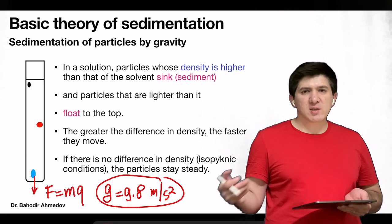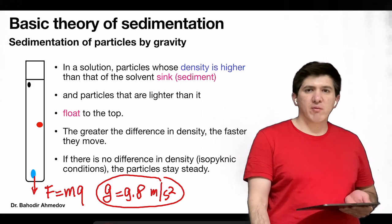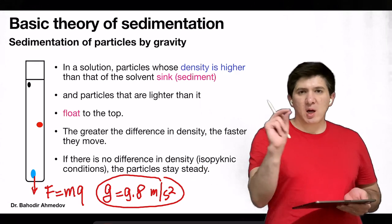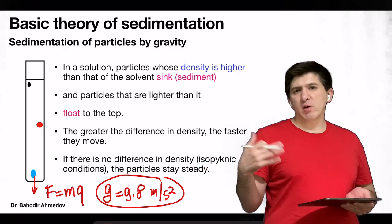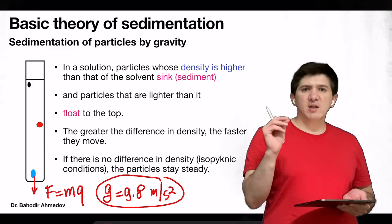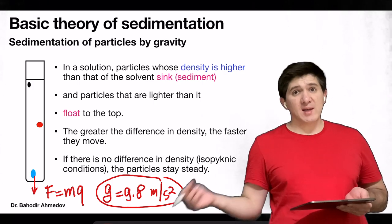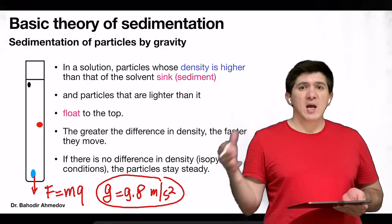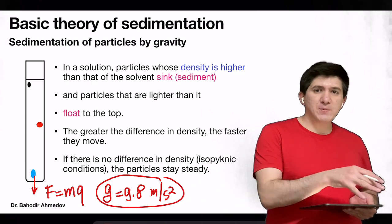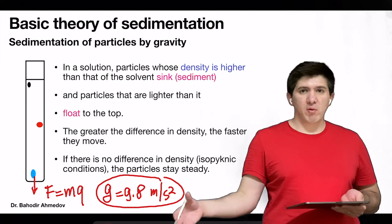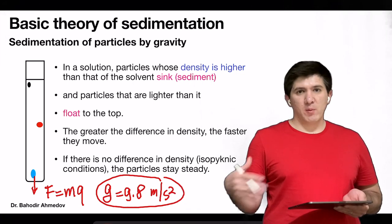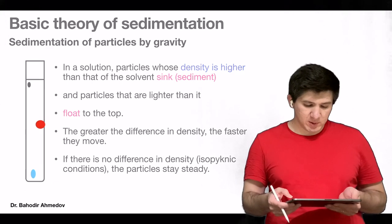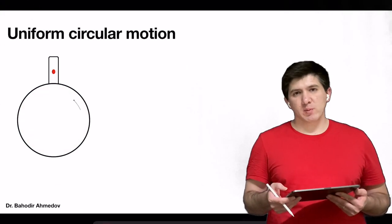This gravitational force is not so strong with respect to tiny particles, and it's not very sensitive to tiny differences in the density of two different particles. So what we want is to substitute this gravitational force with another force that is going to be much stronger.